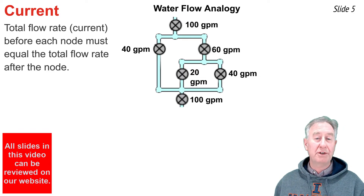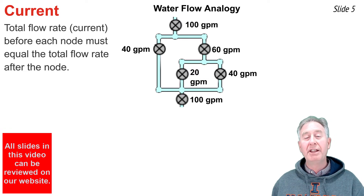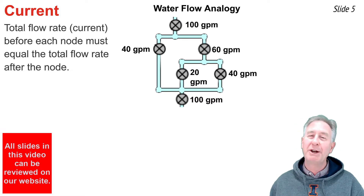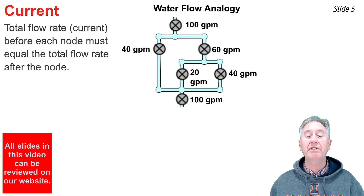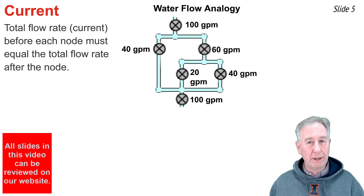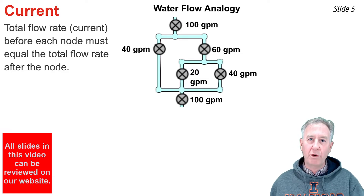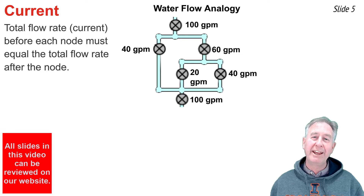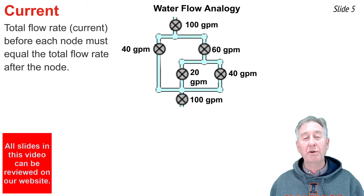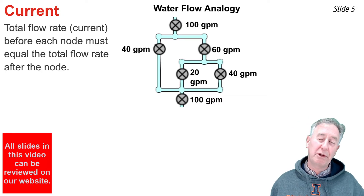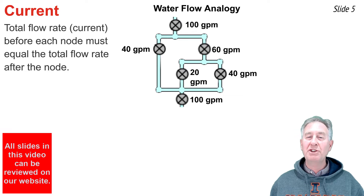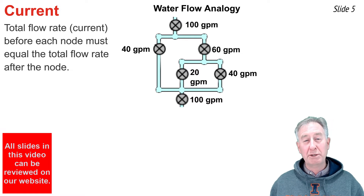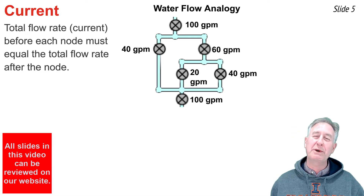Here's a collection of pipes with meters on various pipes. Water flows in from the top and out the bottom. The top meter reads 100 gallons per minute. That water reaches the topmost node and divides into a 40 GPM and a 60 GPM pathway — 40 plus 60 equals 100. The 60 GPM pathway comes to its own node and divides into 20 GPM and 40 GPM — again totaling 60. Eventually all three pathways meet at the bottom: 40 plus 20 plus 40 gives 100 gallons per minute flowing out.